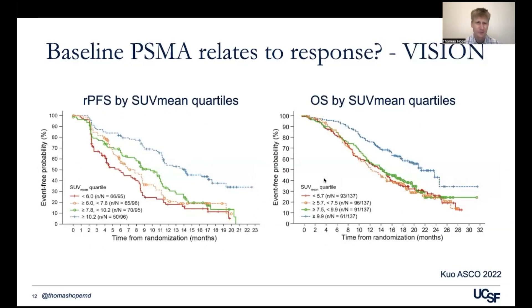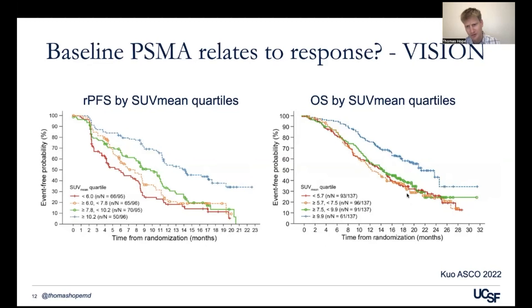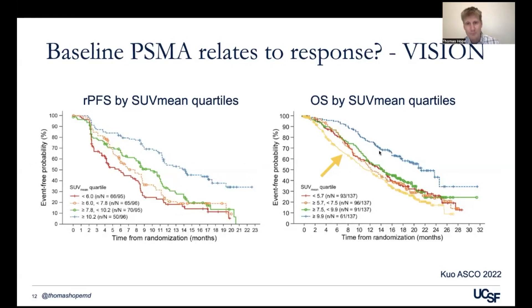This was also done for the VISION trial — they looked at SUV mean quartiles, plotting radiographic progression-free survival and overall survival. As you get higher uptake, you have more prolongation of radiographic progression-free survival. In overall survival, there's a bunching of the lower three quartiles, and the main benefit is actually in patients with high uptake. The main overall survival benefit is driven by patients with an SUV mean over 10, similar to what was seen in the TheraP trial.